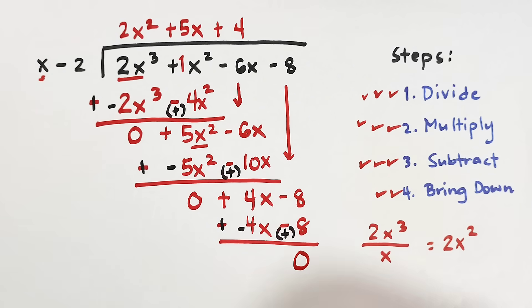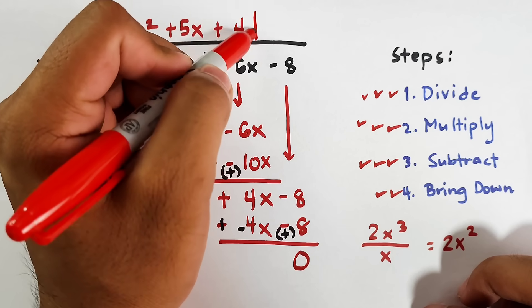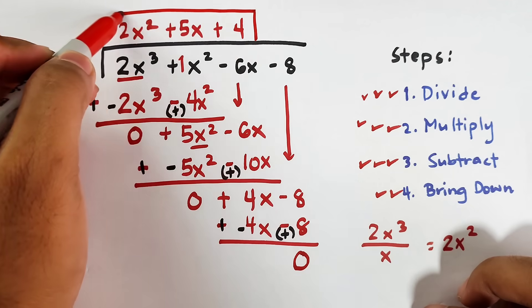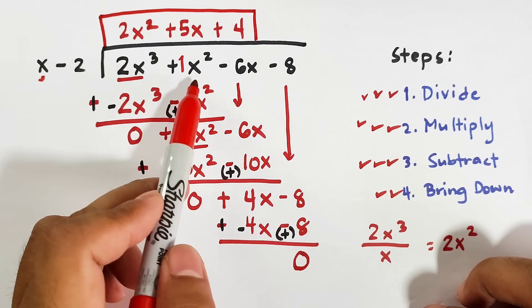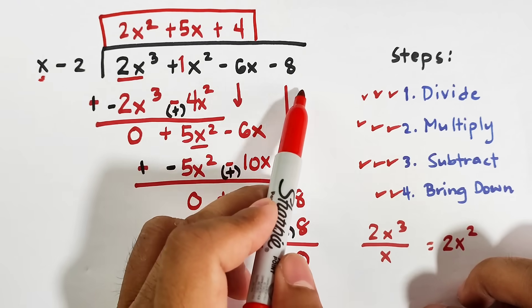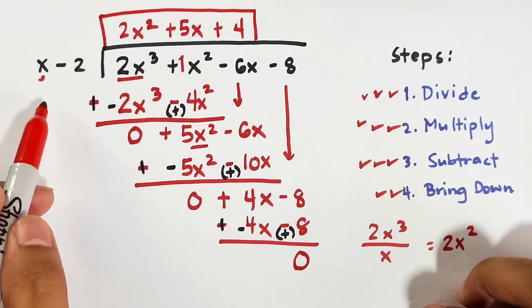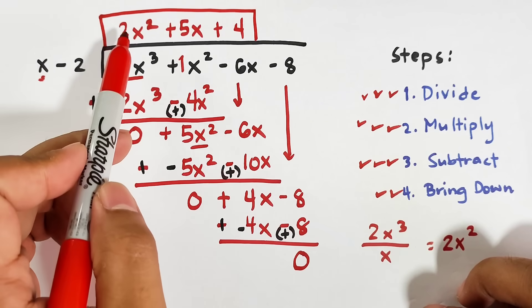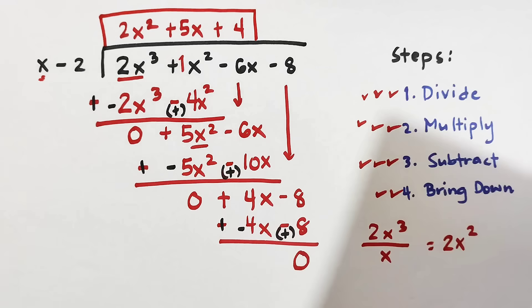Since the remainder is zero, the answer for 2x cubed plus x squared minus 6x minus 8 divided by x minus 2 is simply 2x squared plus 5x plus 4. I hope you learned something from the first example.